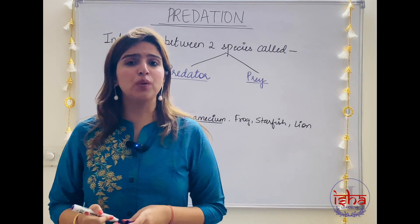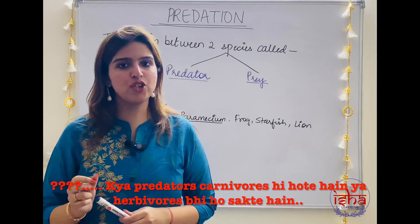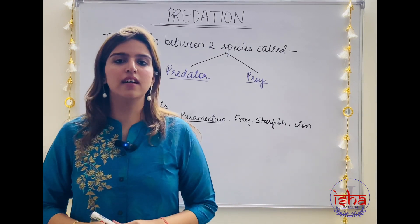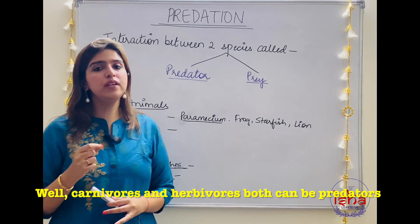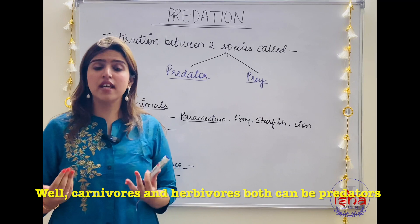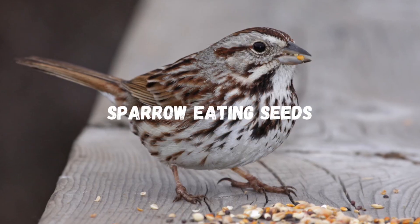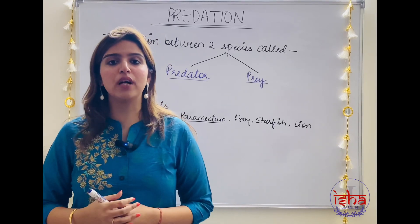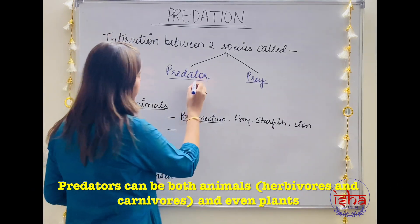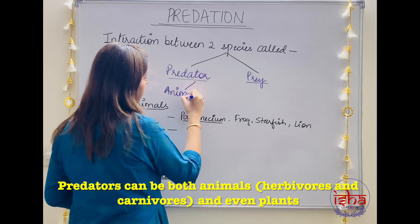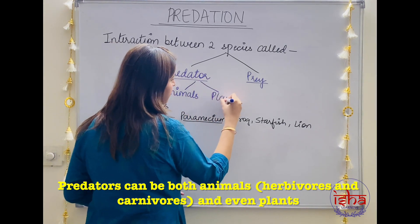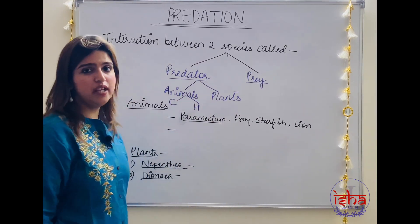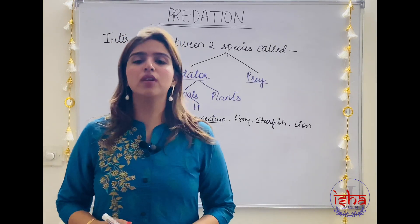A question I want to pose to you is: does a predator always have to be a carnivorous animal? Can a herbivore also be a predator? Well, the answer is that not only a carnivore but a herbivore in its own sense is also a predator. If a bird eats a seed, it is also predating on the seed — the seed serves as the prey for the sparrow. So predators can be both animals and even plants, and among animals they can be both carnivores and herbivores.